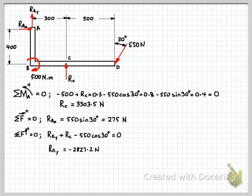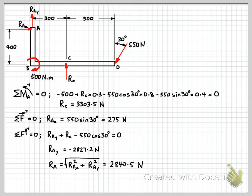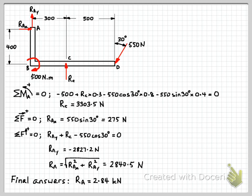Now we have the components of RA in the X and Y directions. Since the question asks for the magnitude, we apply Pythagoras — the square root of the sum of the squares — to get the resultant force at the pin support at A, which is 2840.5 N. Summarizing our final answers to three significant figures: RA = 2.84 kN and RC = 3.30 kN at the roller support C. Thanks for listening, I hope this was helpful.